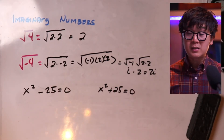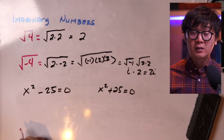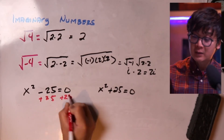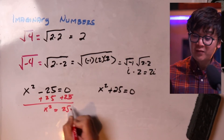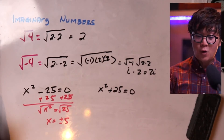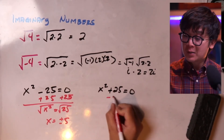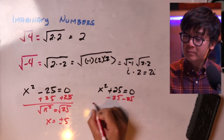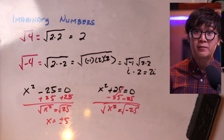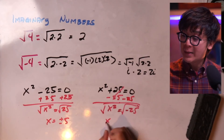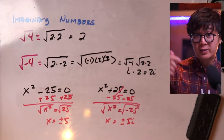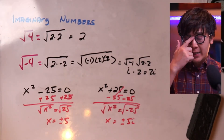For the solution of quadratic equations, if we solve x squared minus 25 equals 0 algebraically, we add 25 to both sides to get x squared equals 25, then take the square root of both sides, so x equals plus or minus 5. For the second problem, x squared plus 25 equals 0, we subtract 25 from both sides to get x squared equals negative 25. Taking the square root, we know the square root of negative 25 does not exist, but we can simplify it as plus or minus 5i.